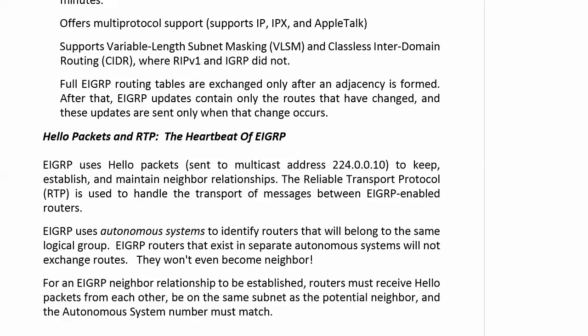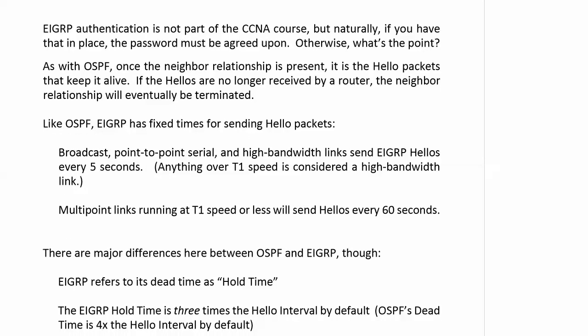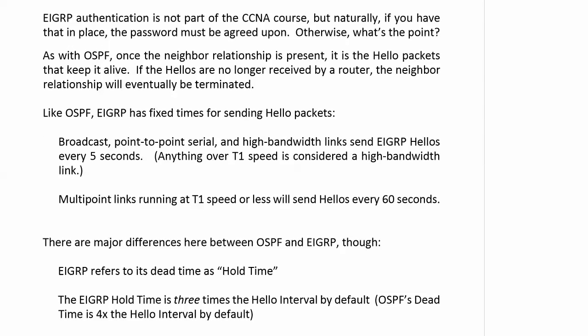For an EIGRP neighbor relationship to be established, routers must receive hello packets from each other, be on the same subnet as the potential neighbor, and the autonomous system number must match. EIGRP authentication exists — not part of the CCNA course — but if in place, the password must match for adjacency to form. As with OSPF, once the neighbor relationship is present, it's the hello packets that keep it alive.